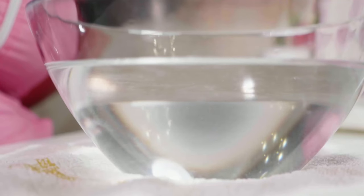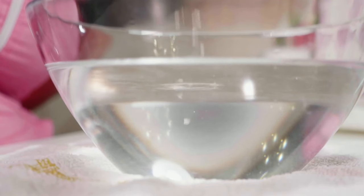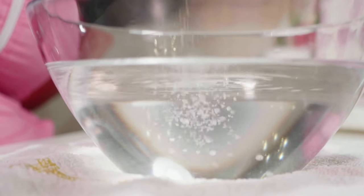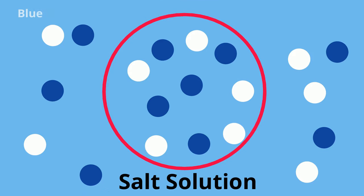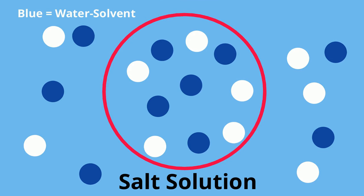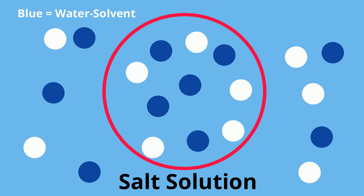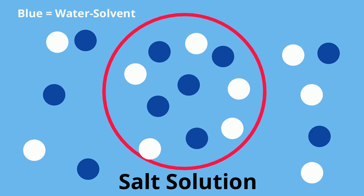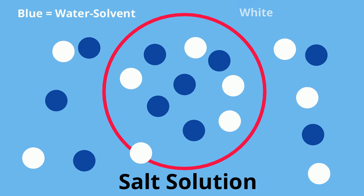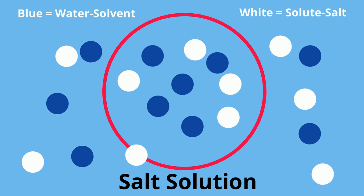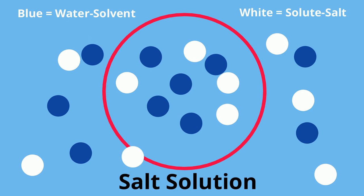In our example, we are going to use salt water. The blue circles are the solvent water, and the white circles are the solute salt.